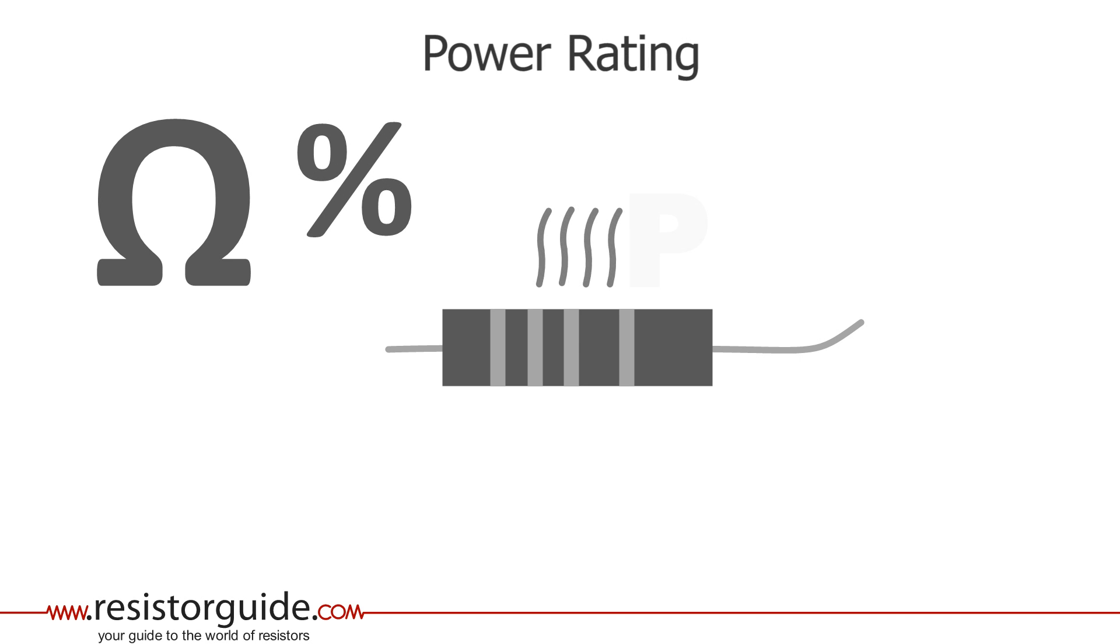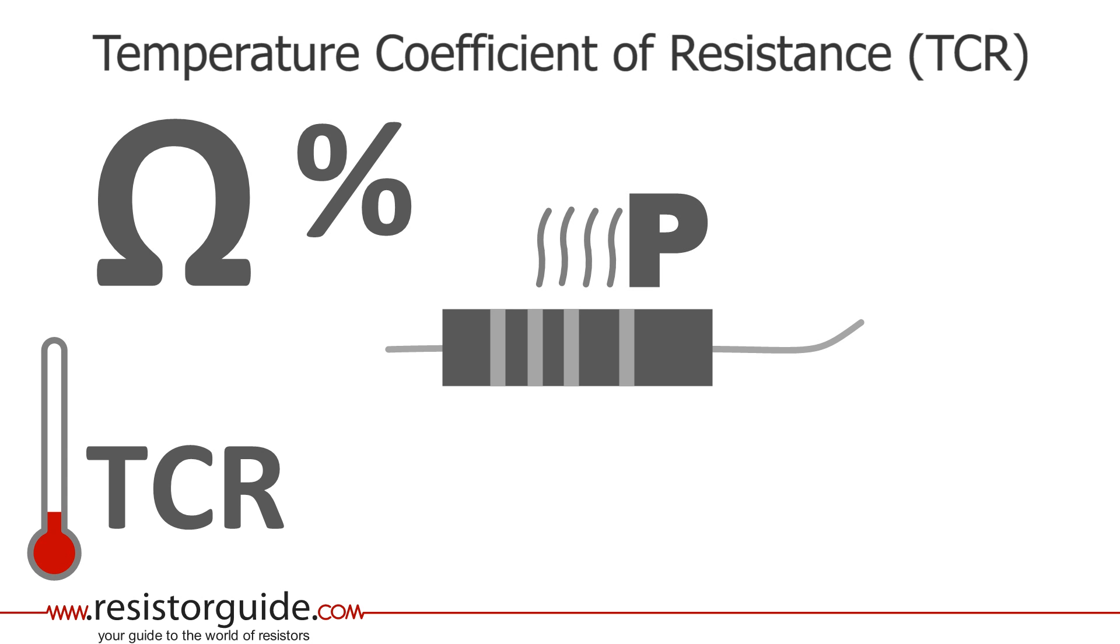The power rating indicates the maximum power that a resistor can handle before it damages. The temperature coefficient of resistance, or TCR, is a measure of how the resistance changes with ambient temperature variations.